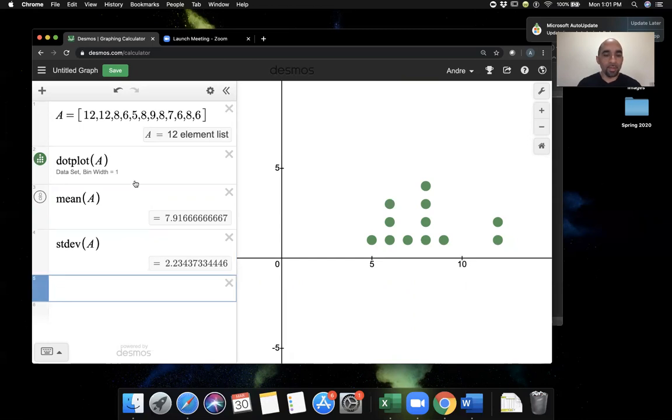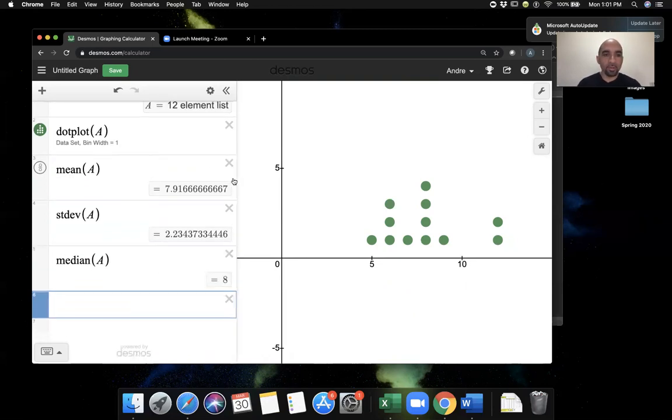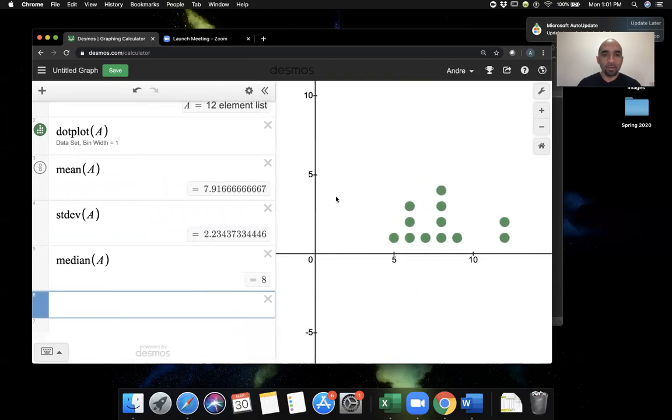I can also find the median—M-E-D-I-A-N parentheses A. So the median of this list is 8. Let's do the five number summary. The five number summary will first find the min—min of A. The minimum value in the data set is five.